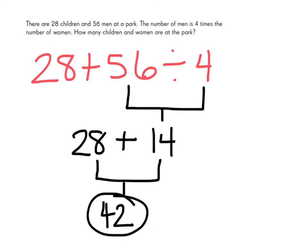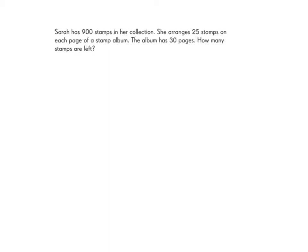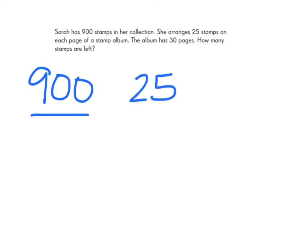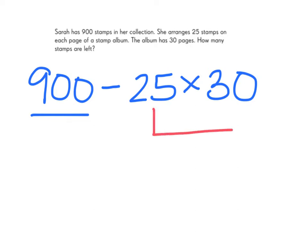Let's try another example. Sarah has 900 stamps in her collection. She arranges 25 stamps on each page of a stamp album. The album has 30 pages. How many stamps are left? We know Sarah begins with 900 stamps. She's going to arrange 25 stamps per page on 30 pages. We want to know how many stamps she has left, so we're going to subtract our 25 times 30 from our 900. My Dear Aunt Sally tells us we have to complete our multiplication problem first because M comes before S, subtraction.